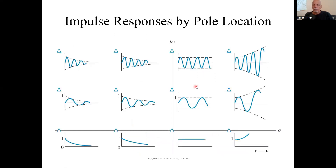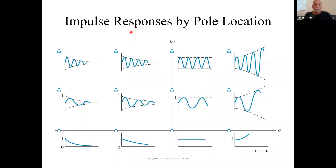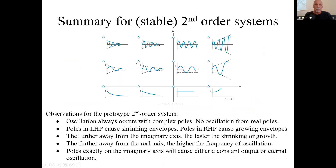We related this to pole placement. The poles are on the real line if you don't get oscillation — you get exponential decay, or if it's in the right-half plane, exponential growth. If it has complex poles, you'll get oscillation. The higher you go up, further away from the real line, the higher the frequency.